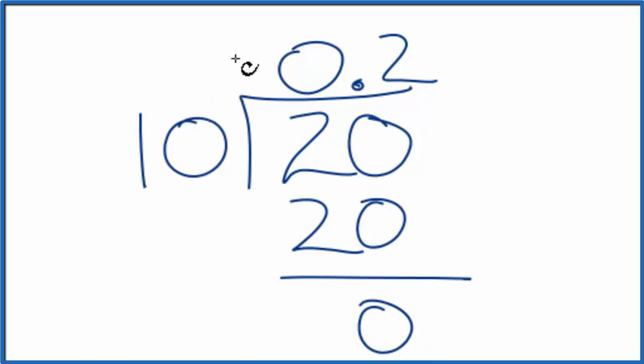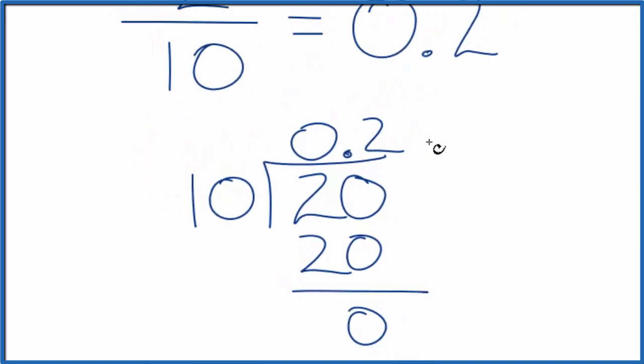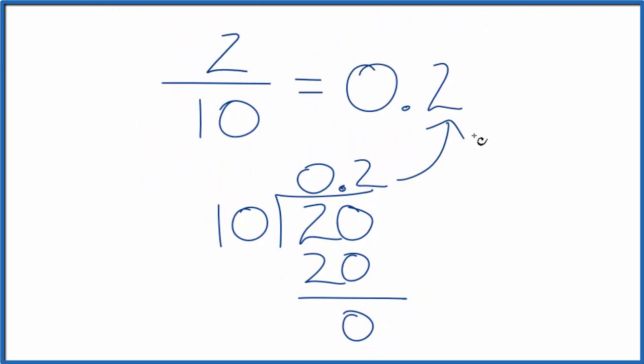So 2 tenths, the fraction, is 0.2 as a decimal. And that's what we found before, so that's not too surprising.